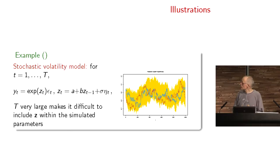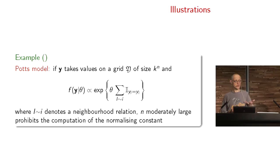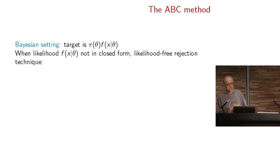Another example is the Potts model: if you have a single parameter theta on a large grid for the observations, you are missing the normalizing constant in the likelihood. If you want to run Bayesian analysis on this model, you get into trouble because the constant is missing. And then the one that started this off is a phylogenetic tree example. At last, what is the ABC algorithm?